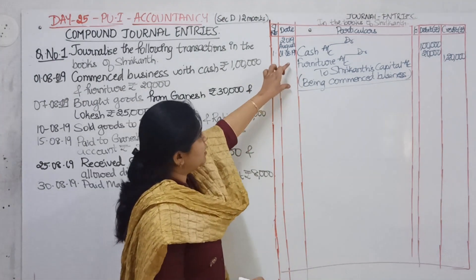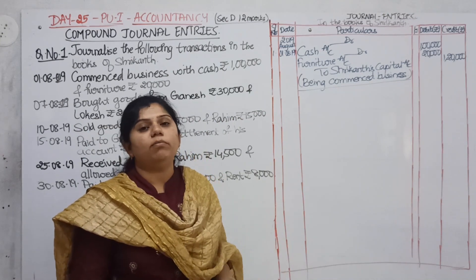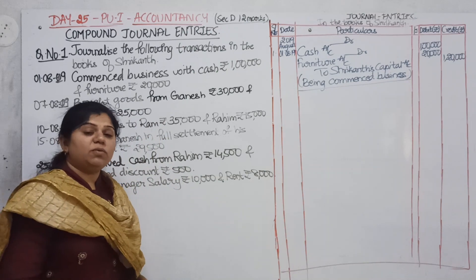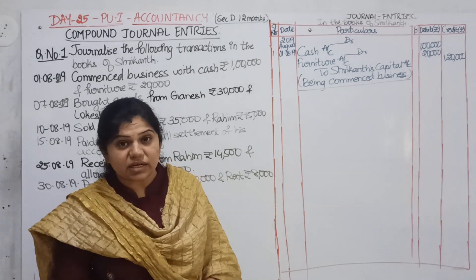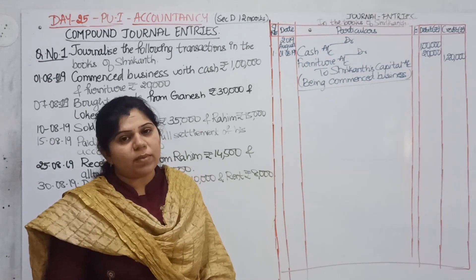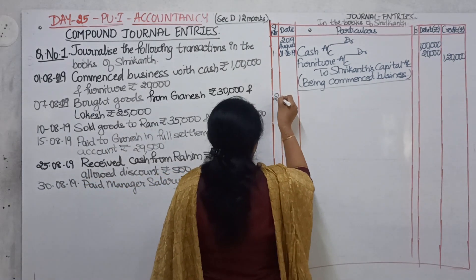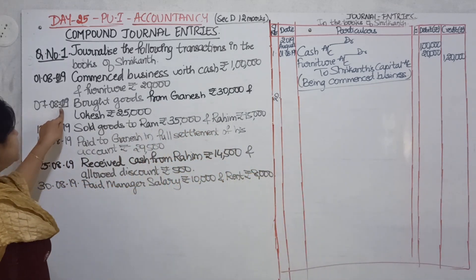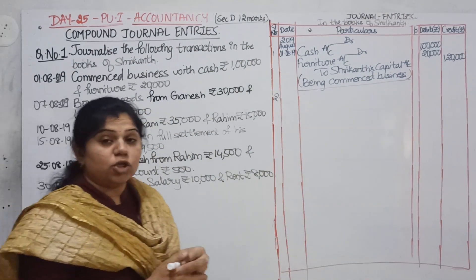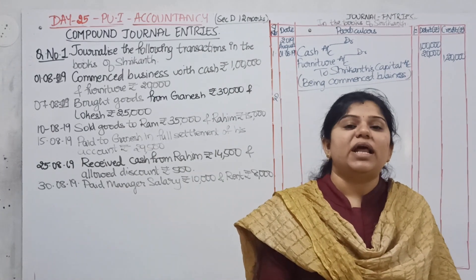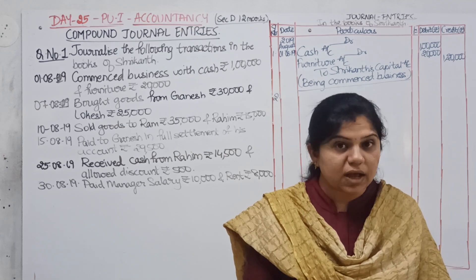This kind of journal entry is called a compound journal entry and it holds 2 marks in your exam. Let us go for the next entry. They are saying: bought goods from Ganesh rupees 30,000 and Lokesh rupees 25,000. You know that the nature of the transaction is the same — only when the nature of the transaction is same can you do it as a compound journal entry.